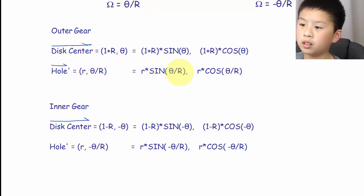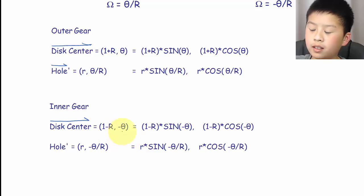This part is very similar to the part for the outer gear. It's the same for the inner gear. Theta goes in the opposite direction as omega as you can see here and here with the minuses. And instead of 1 plus capital R it will be 1 minus capital R.